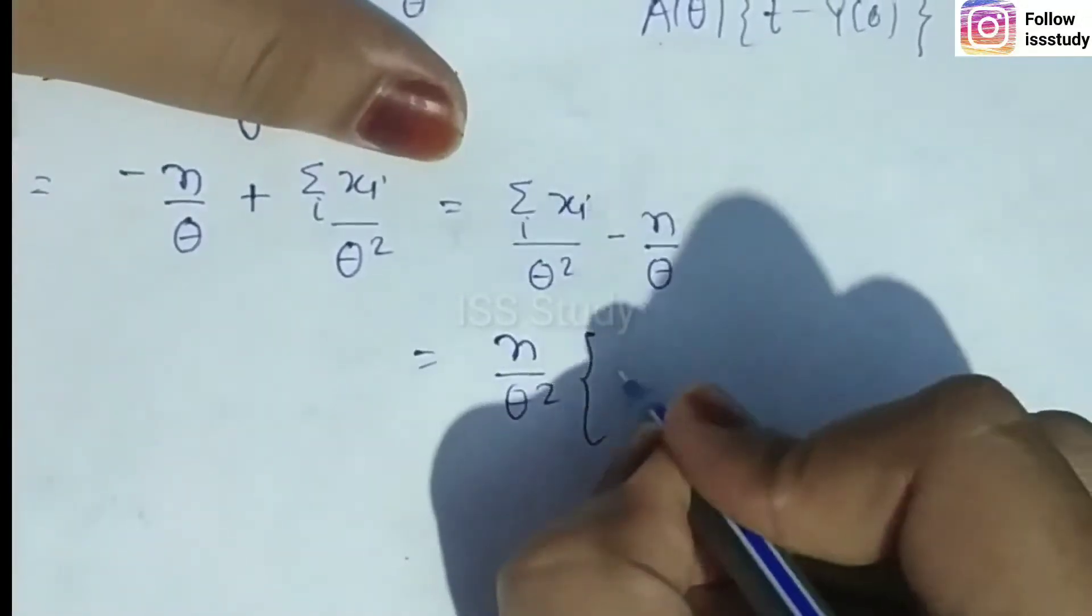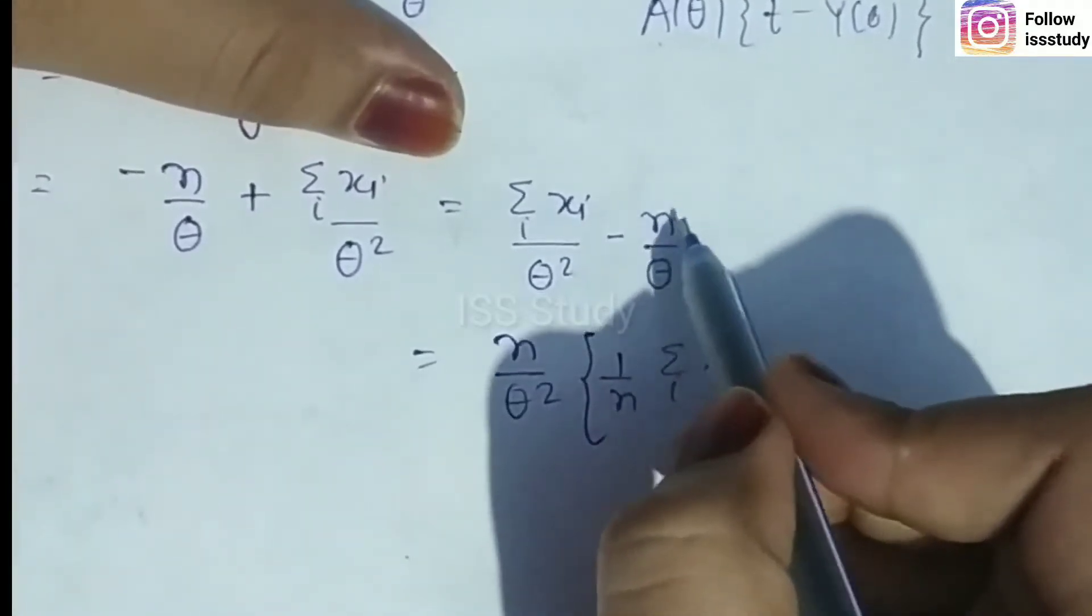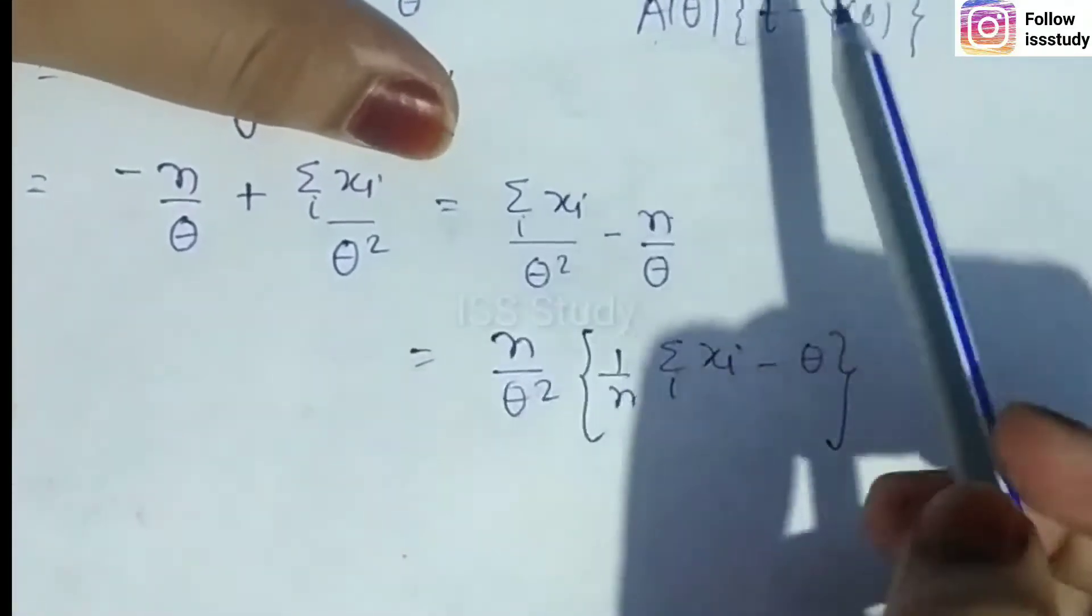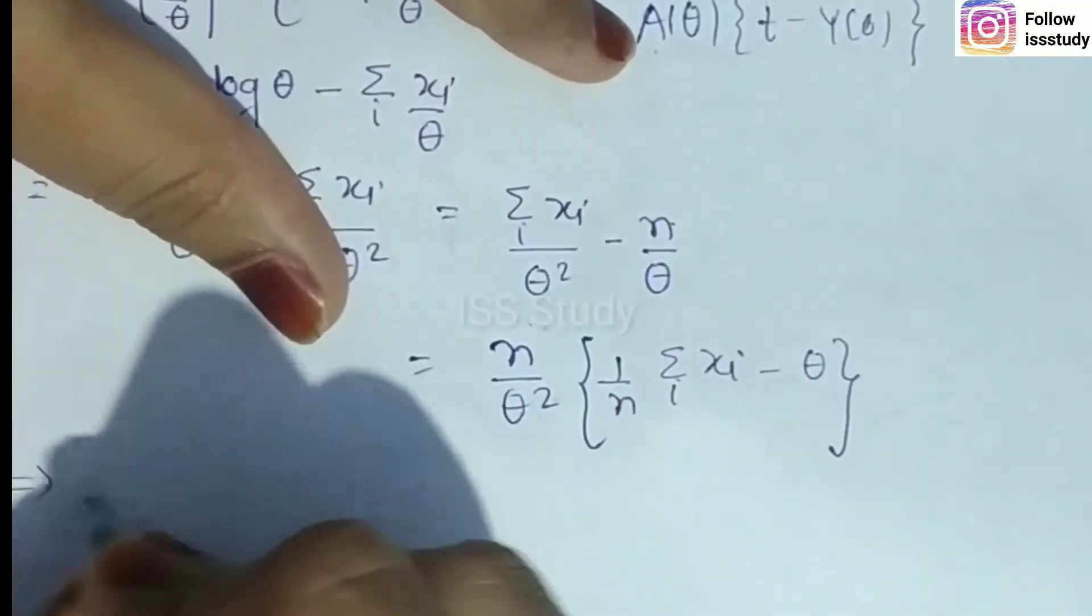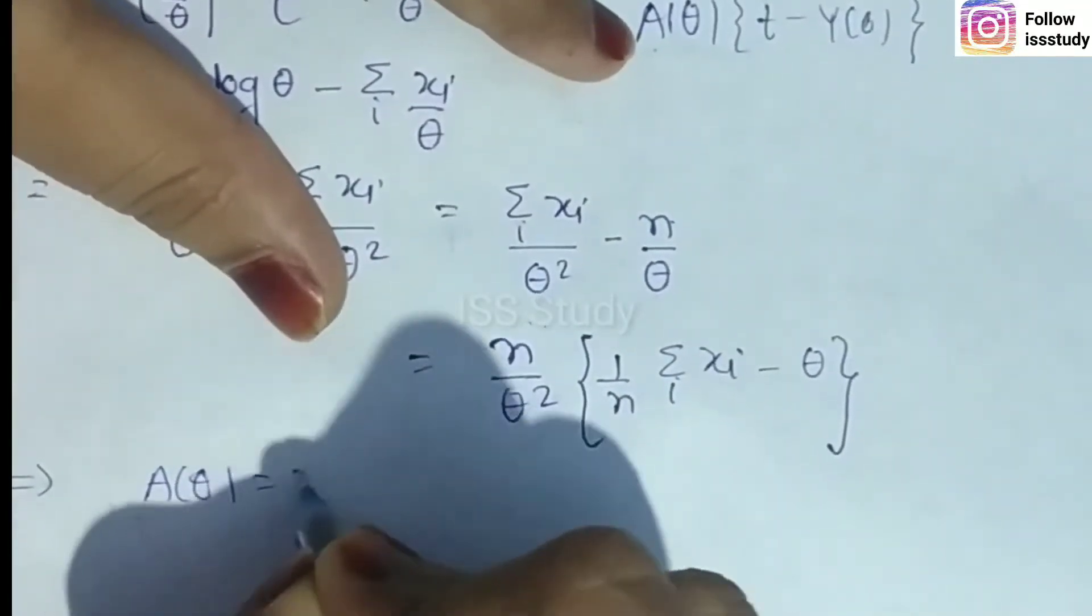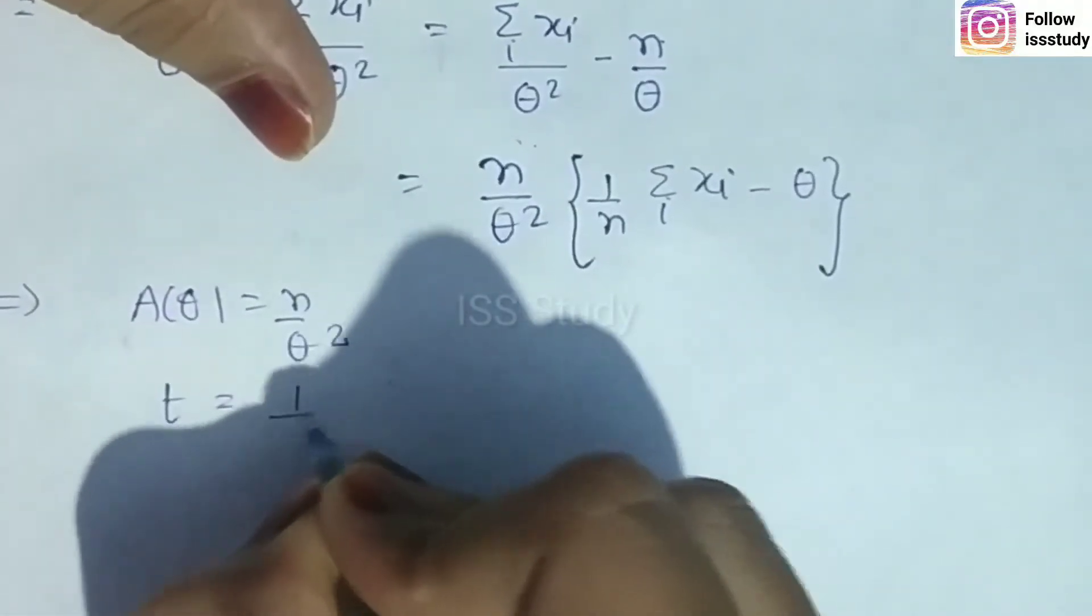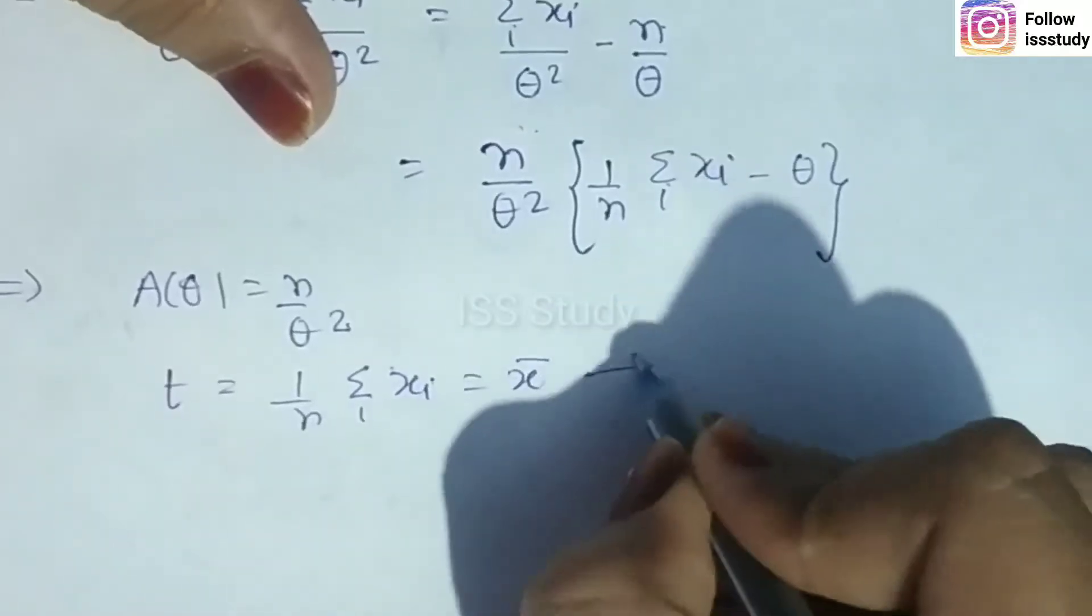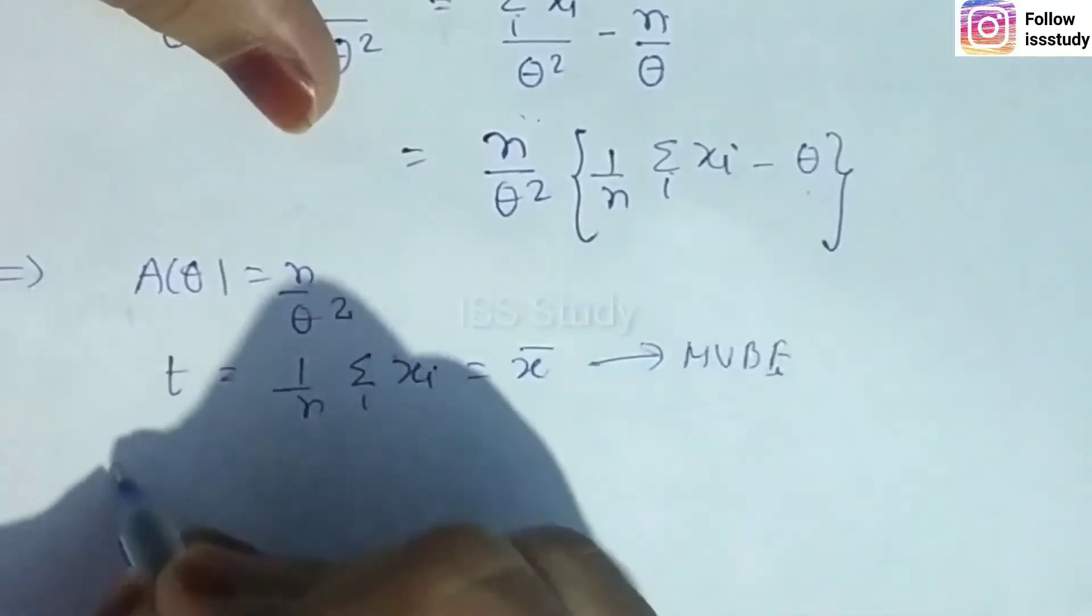Now you can see: 1/n Σxi, then -θ. If we compare, A(θ) value is n/θ², T value is 1/n Σxi which is x-bar, and this is your MVBE estimator for theta. γ(θ) value is θ.